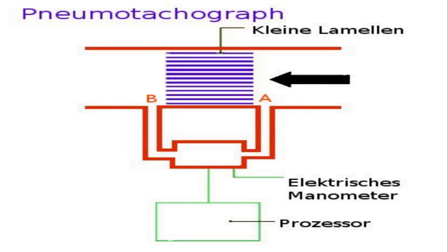As you breathe into the tube, the veins slow the air down just a little bit. We can then measure the difference in pressure between the two ends of the veins.